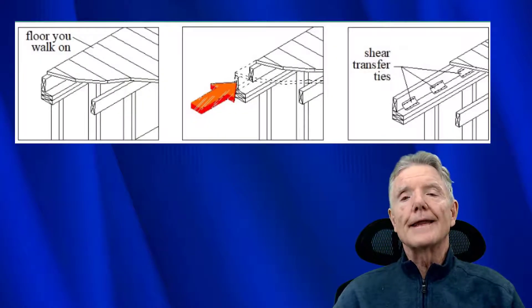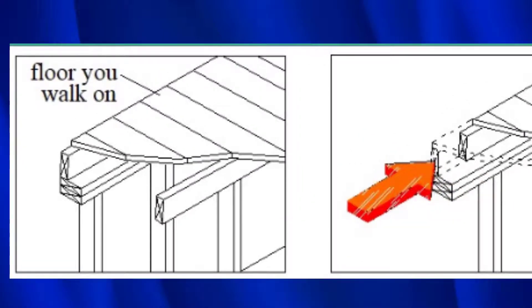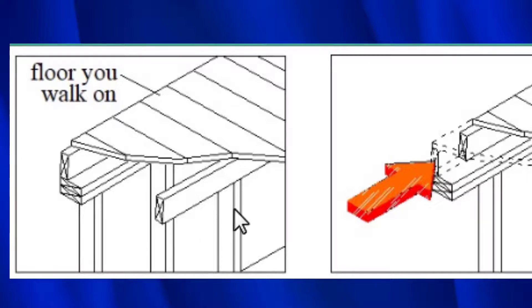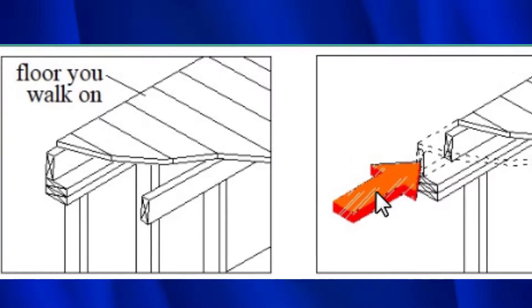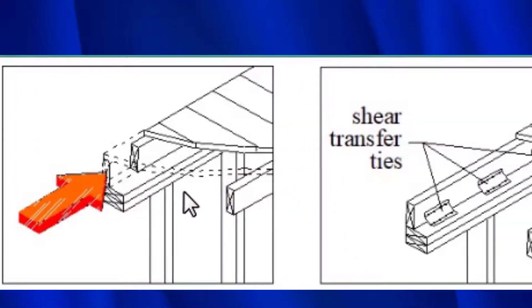The floor connectors are the last part of our cripple wall retrofit. This is the floor that you walk on, the floor framing that supports it, which sits on top of the cripple wall. During an earthquake we can't have this floor framing slide on top of the cripple wall. Here you can see what happens — earthquake forces come and it slid about eight inches. We can't have that happen.